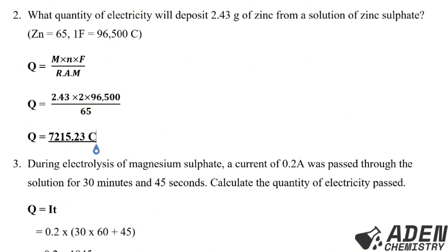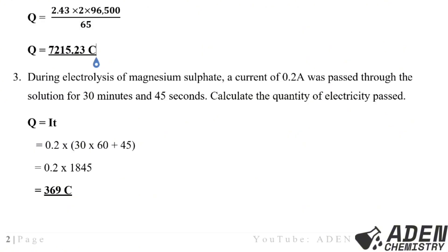Example 3: During electrolysis of magnesium sulfate, a current of 0.2 amperes was passed for 30 minutes and 45 seconds. Calculate the quantity of electricity. Using Q = IT: T = (30 × 60) + 45 = 1,845 seconds. Q = 0.2 × 1,845 = 369 Coulombs.